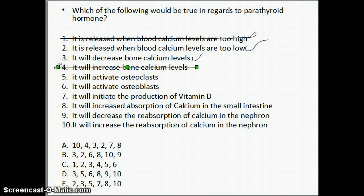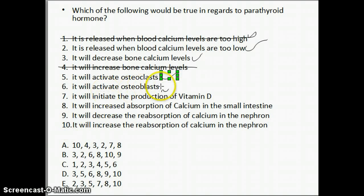To continue on, we have the difference between osteoclasts and osteoblasts. Osteoclasts erode or break down bone, and in doing so, take calcium from the bone and put it into the blood. Osteoblasts build bone and store calcium in bone — they take calcium from the blood and put it into the bone. So parathyroid hormone would activate osteoclasts because osteoclasts take the calcium from the bone and put it into the blood, which is what we want.